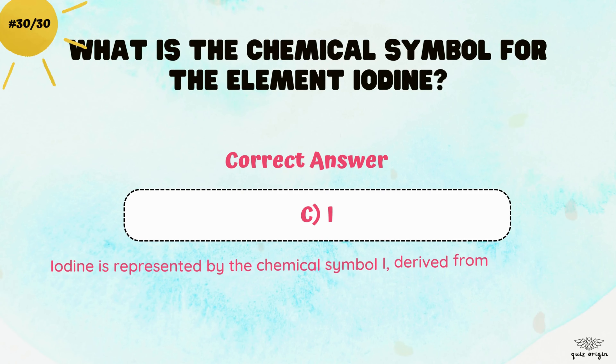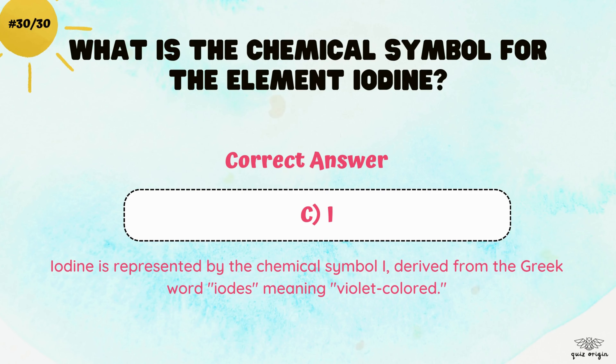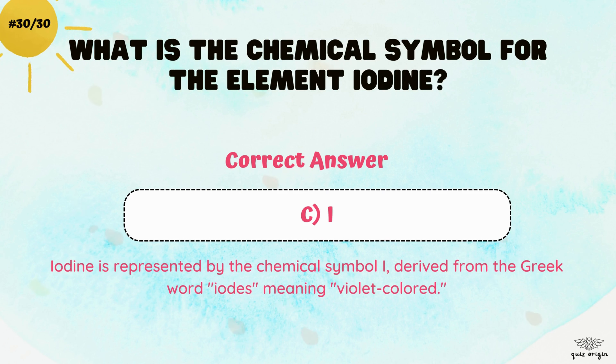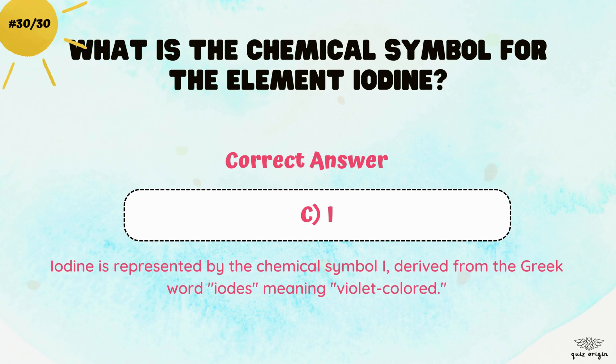The correct answer is C. I. Iodine is represented by the chemical symbol I, derived from the Greek word Iodes, meaning violet-colored.